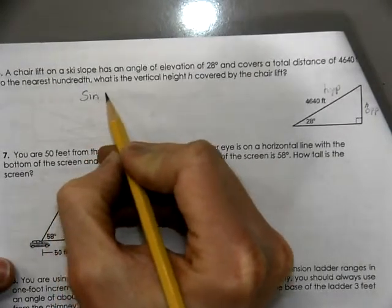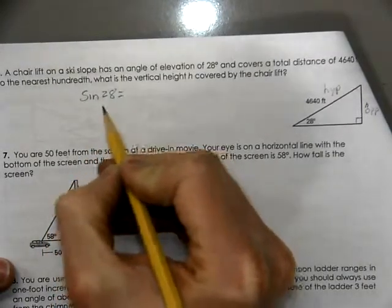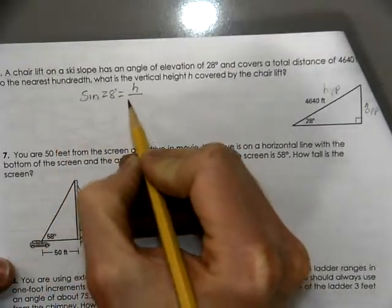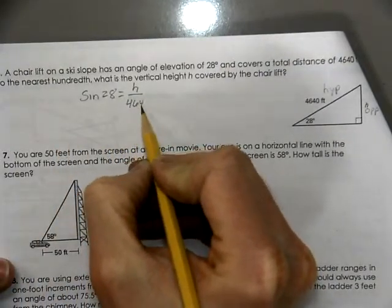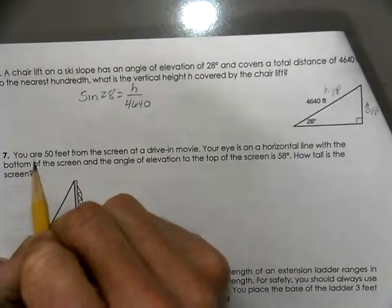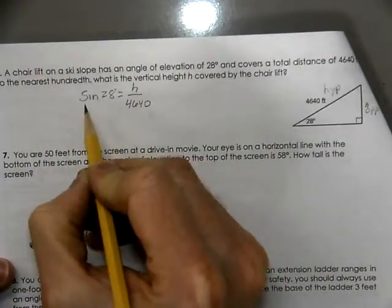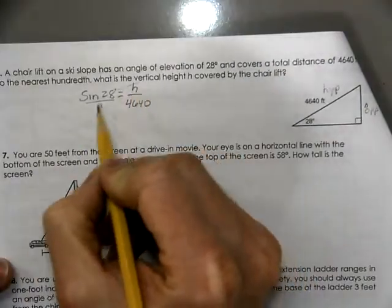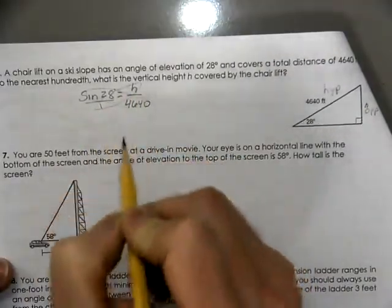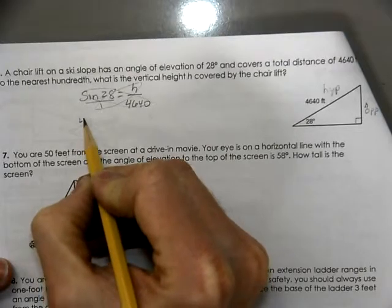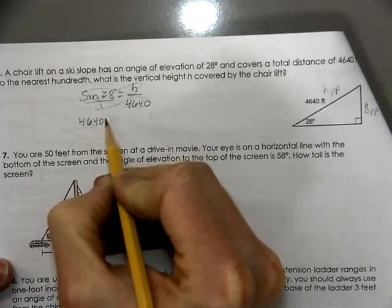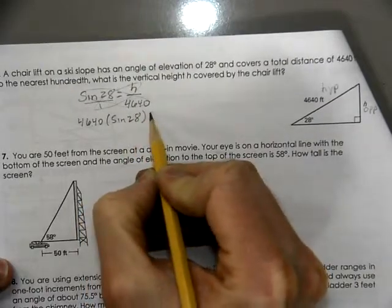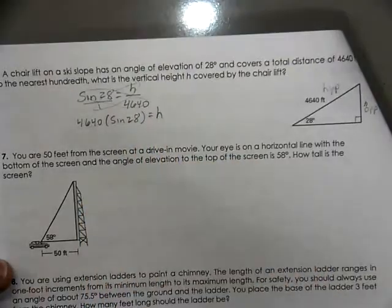So, we're going to use sine of 28, which equals the opposite side over the hypotenuse. Now, one way to solve this is to put it into a proportion and cross-multiply. So, we'll get 4,640 times the sine of 28 equals h.